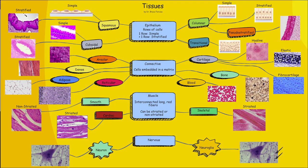Another type of cell is the cuboidal. These are little cube-like cells. You can have one row — simple cuboidal — which usually lines the ducts. And then we have stratified cuboidal, which is a thicker lining for ducts. And then we have columnar, which are more rectangular-type shaped cells, like extended columns. We have simple — one row of columnar — and stratified, more than one row.